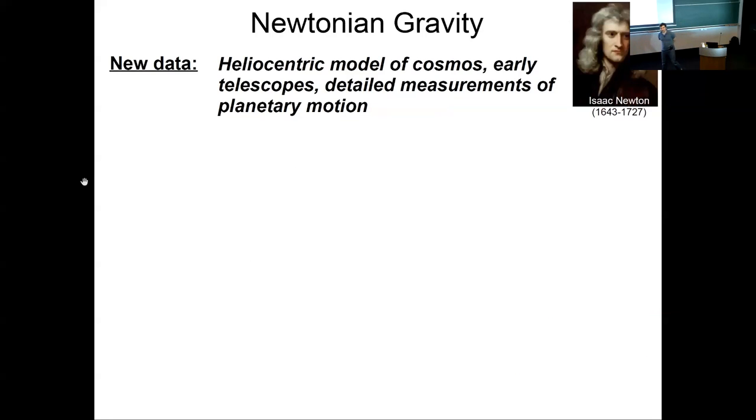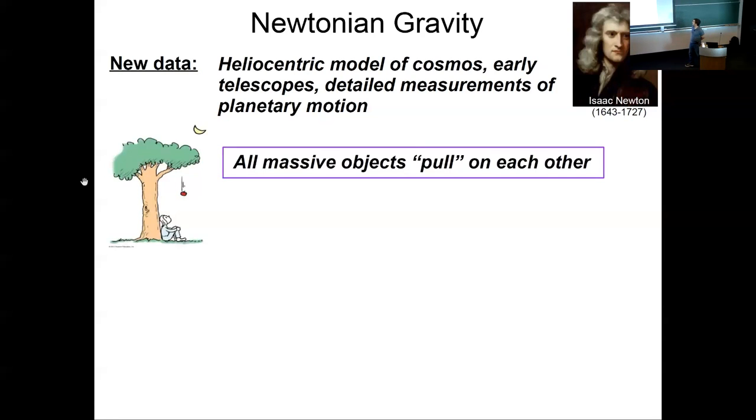About 2,000 years later, Isaac Newton was living in a slightly different informational background than Aristotle. By his time, the heliocentric model of the cosmos was accepted where the sun was at the center, not Earth. So the explanation of gravity of Aristotle didn't make sense anymore. There was also early use of telescopes, decent measurements of planetary motion.